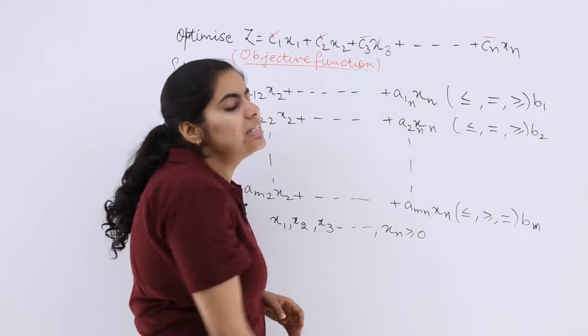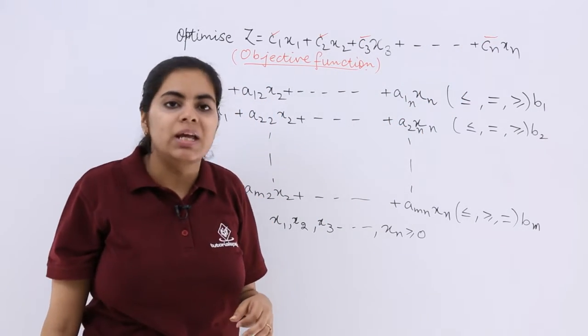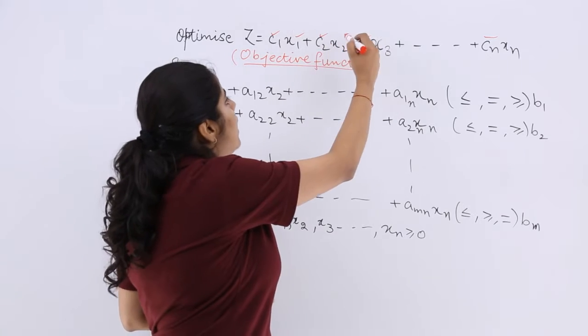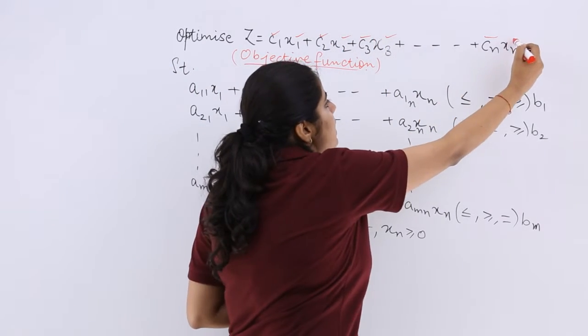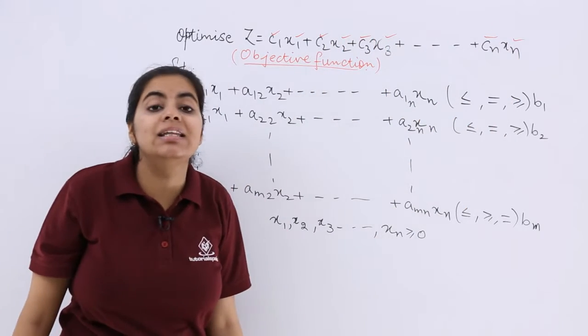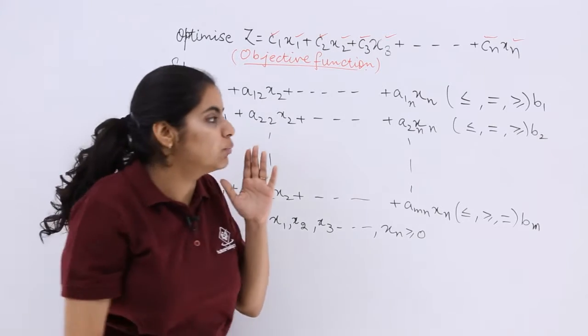c3 and so on till cn are the constants, and x1, x2, x3 and so on till xn are the decision variables.